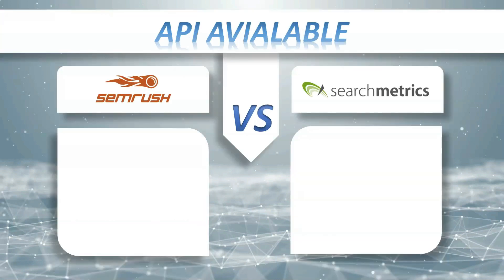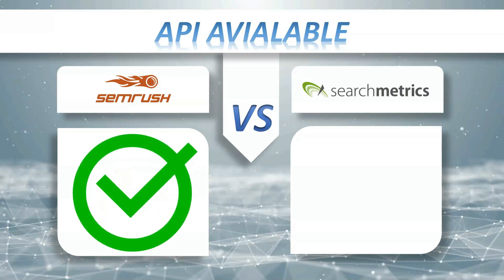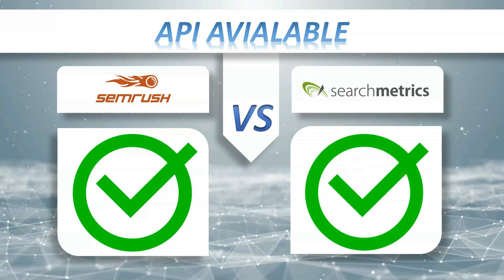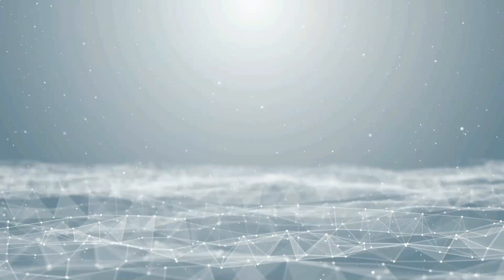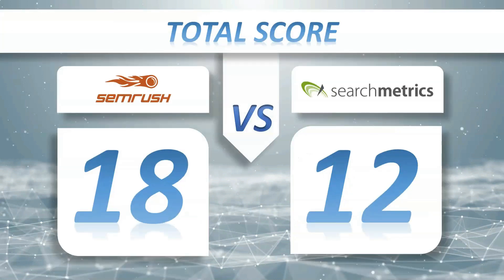API Available: SEMrush has it, Search Matrix Essentials also has it. So the total score is: SEMrush 18, Search Matrix Essentials 12.